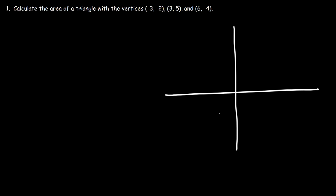3, negative 2, which is somewhere in this region - this is just a ballpark estimate. The second point is at 3, 5, which is probably somewhere over here. And the third one is at 6, negative 4, which is probably in that region. So we have a triangle that looks roughly like this.